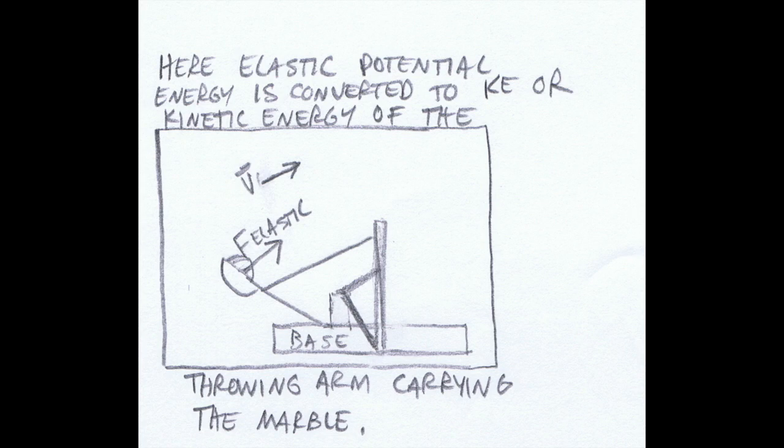This diagram shows the catapult at release. So here the elastic potential energy is converted into kinetic energy, or the kinetic energy of the throwing arm carrying the marble. We can see here now that the throwing arm has a velocity in the direction indicated.